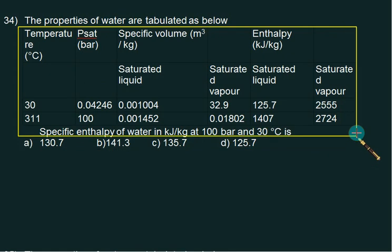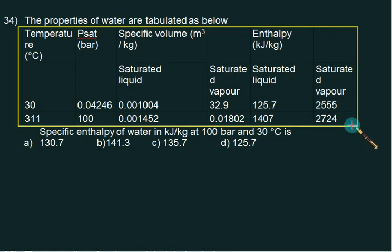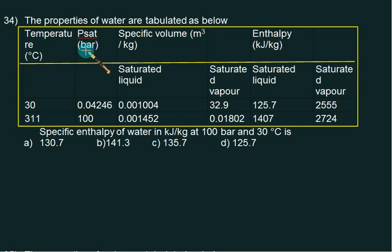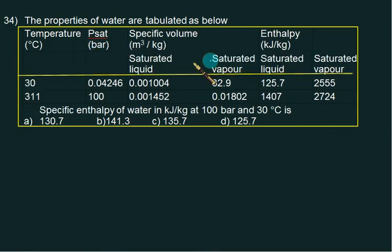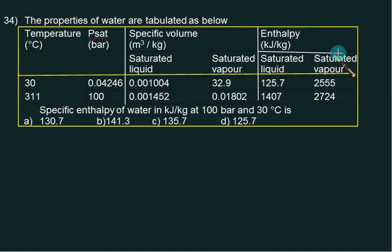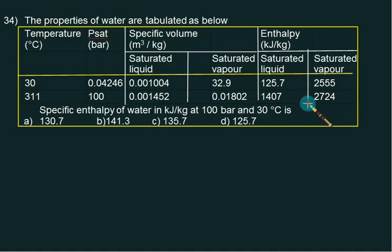We now calculate the specific enthalpy of compressed water at 100 bar and 30°C. We are given the specific volume of saturated liquid and vapor, and the enthalpies of saturated liquid and vapor. At 30°C the saturation pressure is 0.04246 bar, and then pressure is raised to 100 bar by a pump. The work done by the pump is stored in the form of enthalpy.